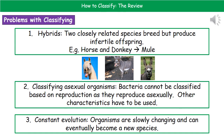The third and final problem is constant evolution. Organisms are slowly changing and can eventually become a new species, so there will be a point where you're looking at them and thinking: is it still the same species, or has it changed enough to be a new species?